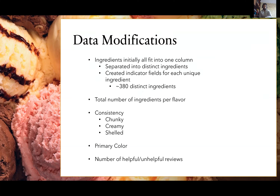When I first made my plan I guessed there were maybe 80 distinct ingredients, but when I got to it there were closer to 400. That took a while — separating all the ingredients from one column into a unique list and putting them all as indicator variables to indicate whether a given flavor has that ingredient or not. For example, sugar would be true or false for each flavor.